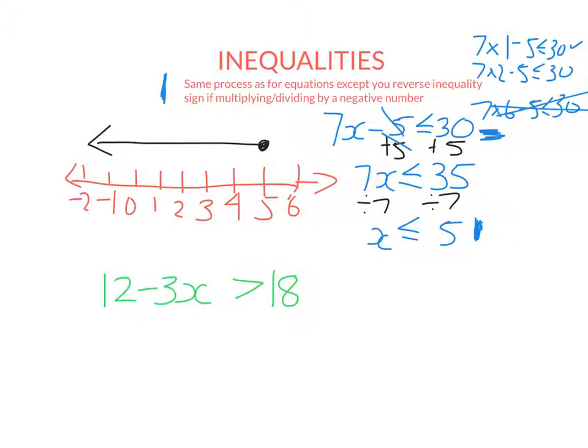So let's go ahead and do this example here. So it's the same processes for equations to start with. So this is a positive 12. So to get rid of it, I need to subtract 12 and cancel out. So, of course, I have to do that from the other side as well. So I get minus 3x is greater than 18 minus 12, 6.